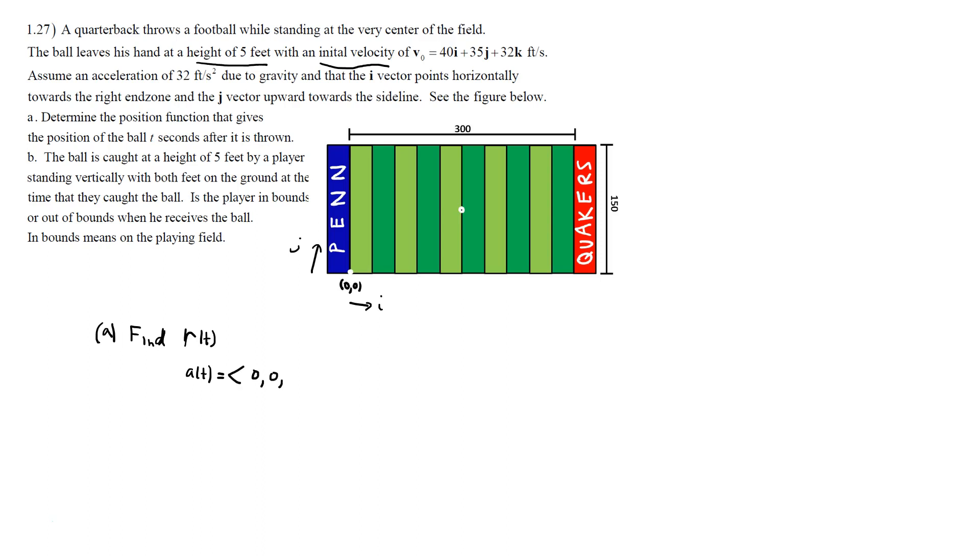So we have the fact that the gravitational constant 32 feet per second is working in the K direction. So K is coming, K is how far off the ground you are. So K is negative 32 feet per second squared for acceleration. Velocity is the integral of acceleration. When you integrate a vector, you integrate component wise.